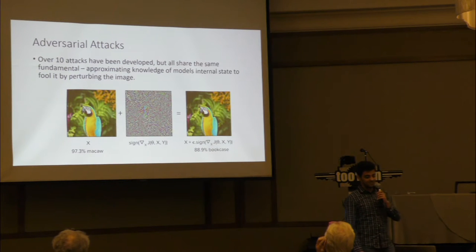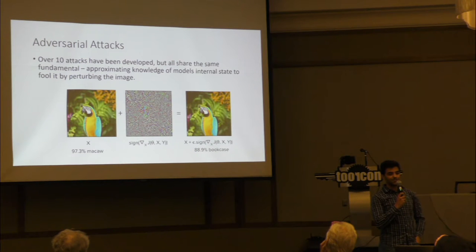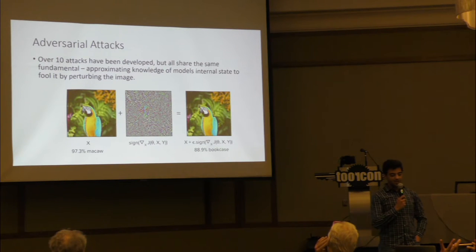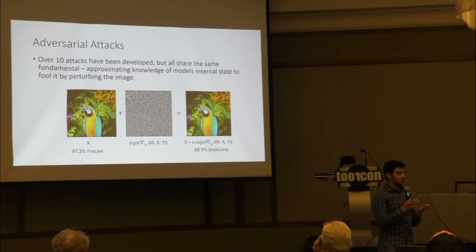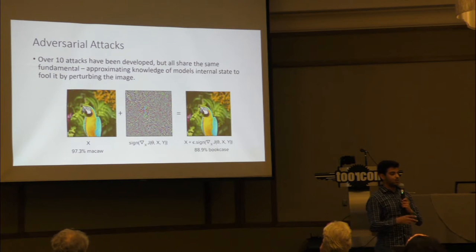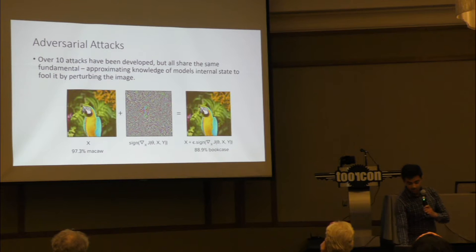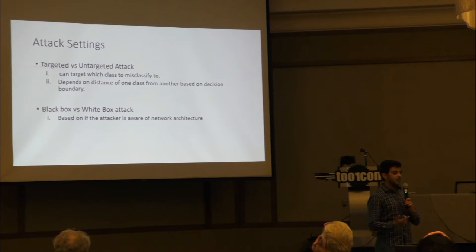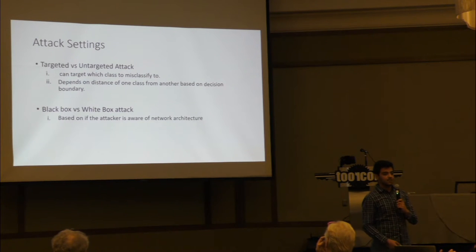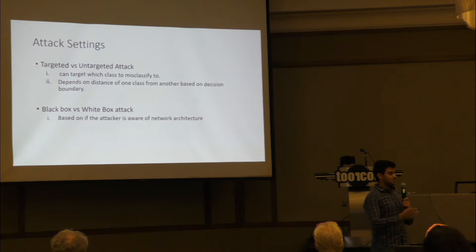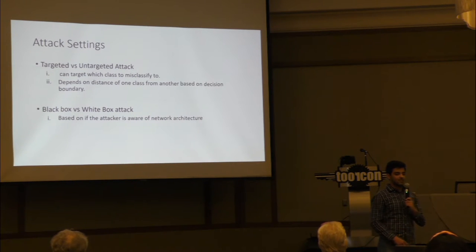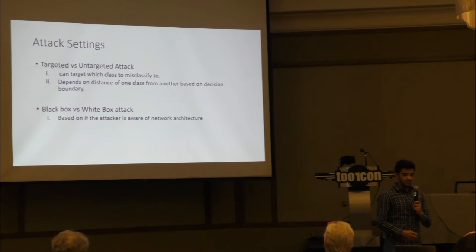A lot of work has been done on this. Researchers have released about 15 new attacks depending on optimization and gradient-based methods. They all share one common thing: you try to find the internal structure of what's going on, replicate it, and then fool it by going in the opposite direction. These attacks can be carried out in two ways: untargeted, which just misclassifies to anything else, and targeted, the most dangerous one, where you can target what you want to misclassify — for example, a stop sign to a green light. There's also white box and black box depending on whether the attacker knows the network architecture.